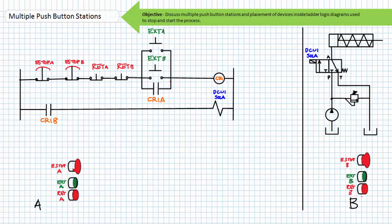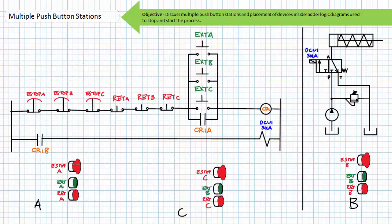Consider troubleshooting scenarios in which any one of the e-stops or retracts developed an inadvertent open — the cylinder would never extend. Voltmeter checks at various points in the pilot circuit would show all voltage being dropped across the unintended open, counter to expectations. In the ready state, ordinarily all voltage would be dropped across the parallel combination of extend buttons and the holding contact. If e-stop B was open, all voltage would be dropped across e-stop B, with elements between those points floating and not electrically connected to the circuit. Consider another troubleshooting scenario in which any one of the extends inadvertently sticks closed — the cylinder would always extend, provided all the e-stops and retracts were closed.